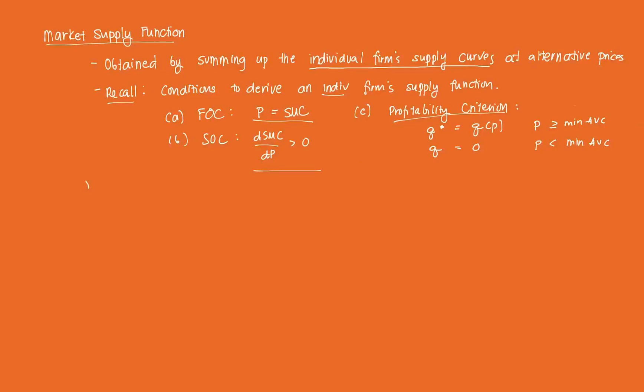Assuming we have, say, F number of firms, we can calculate for the market supply function, which is capital QS is equal to the sum of all firms.